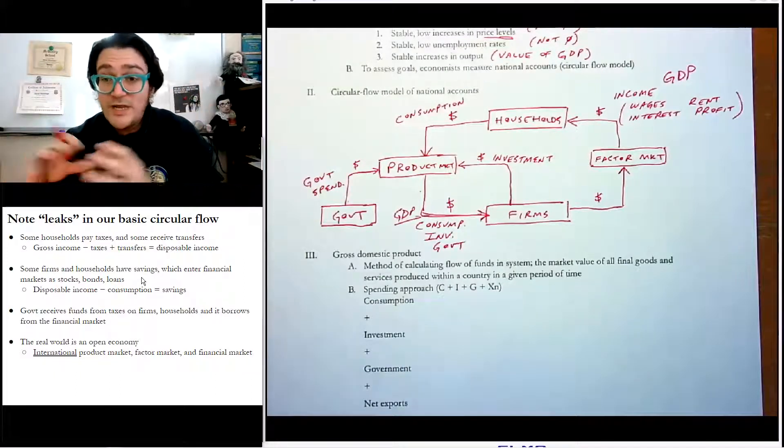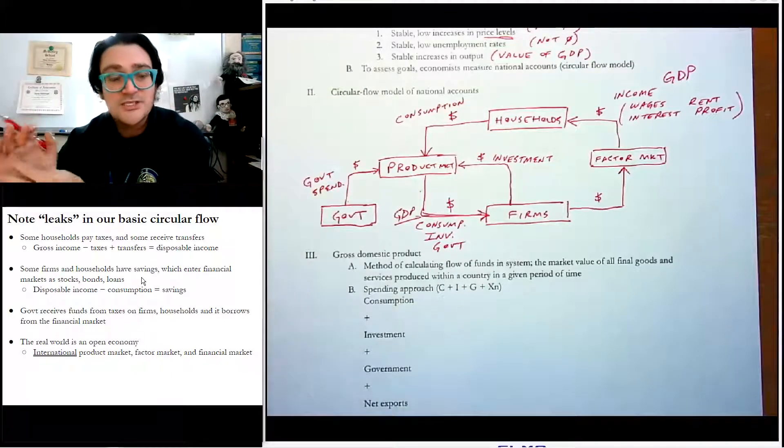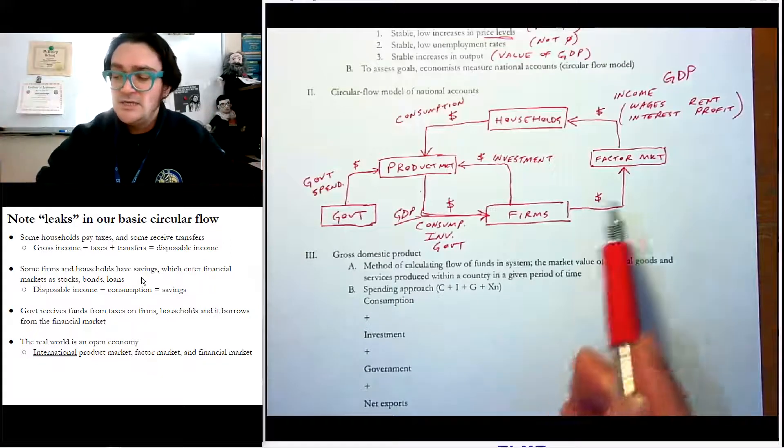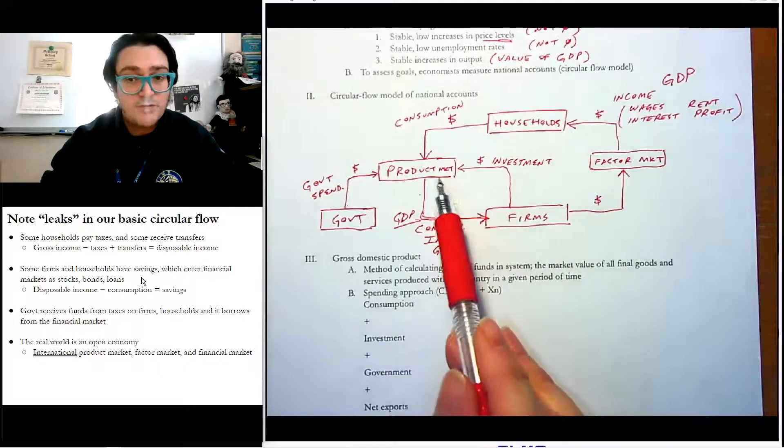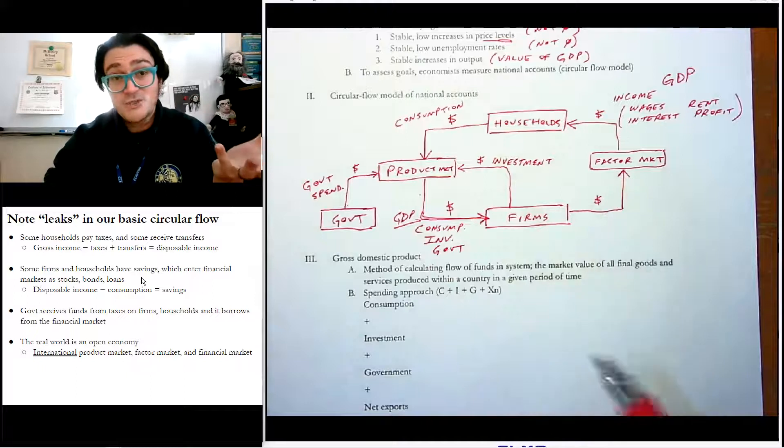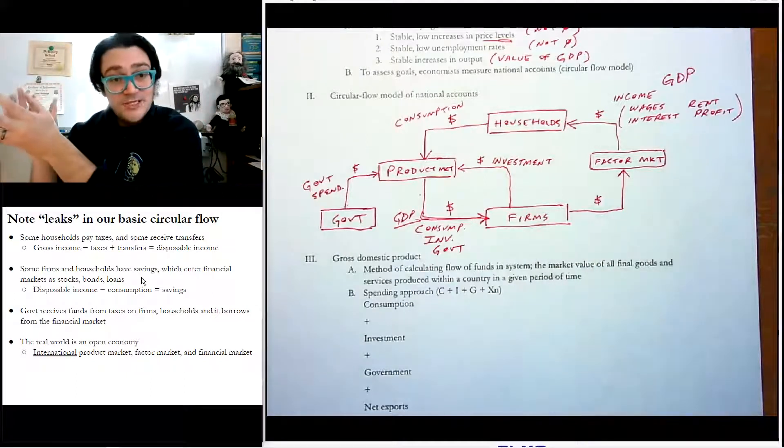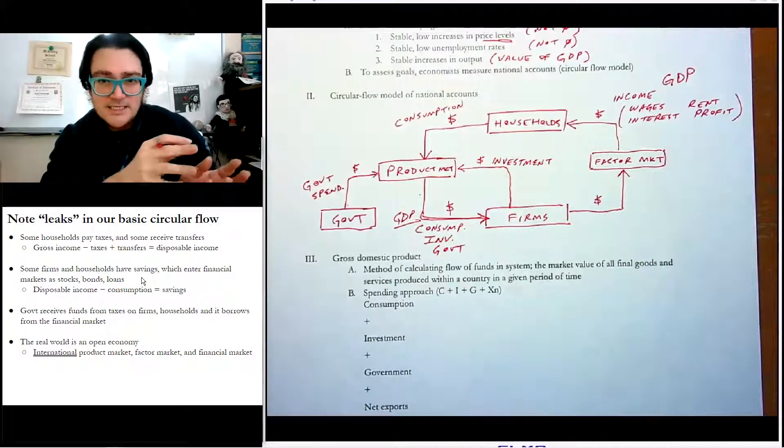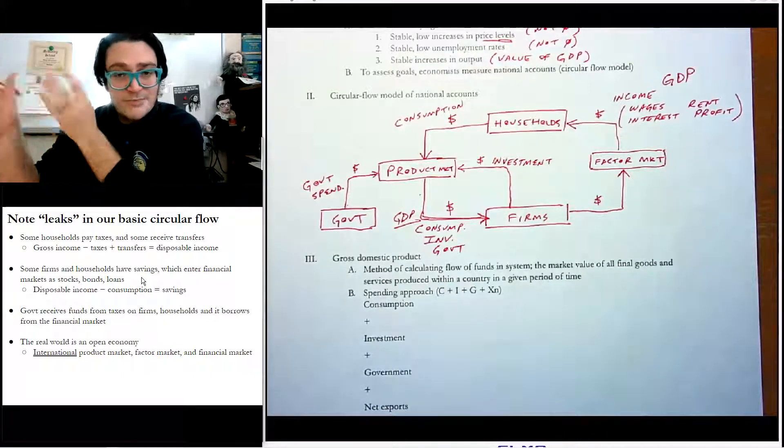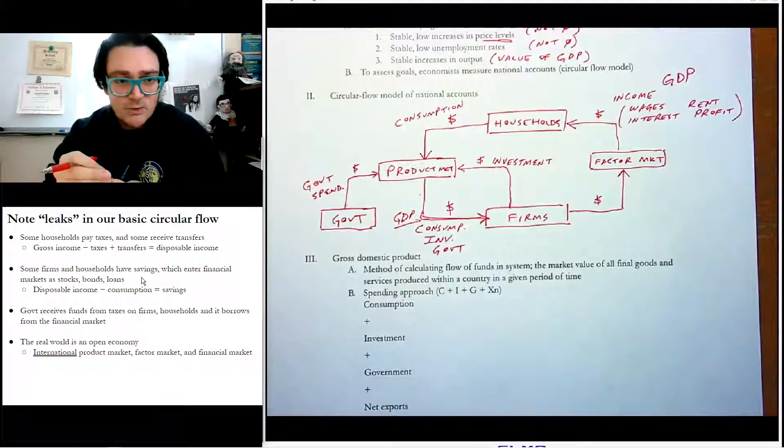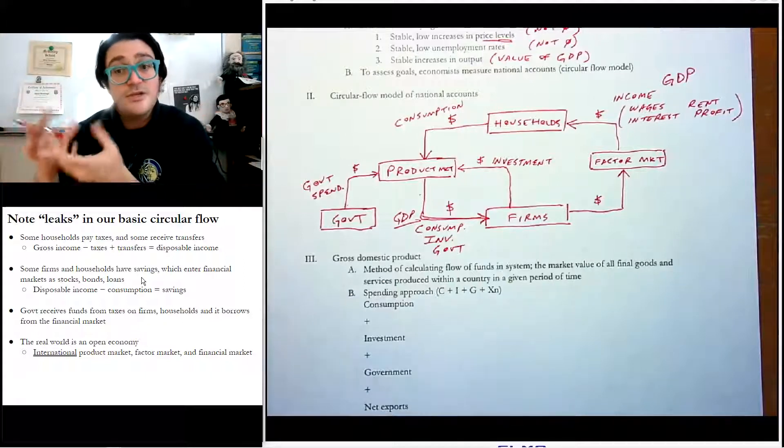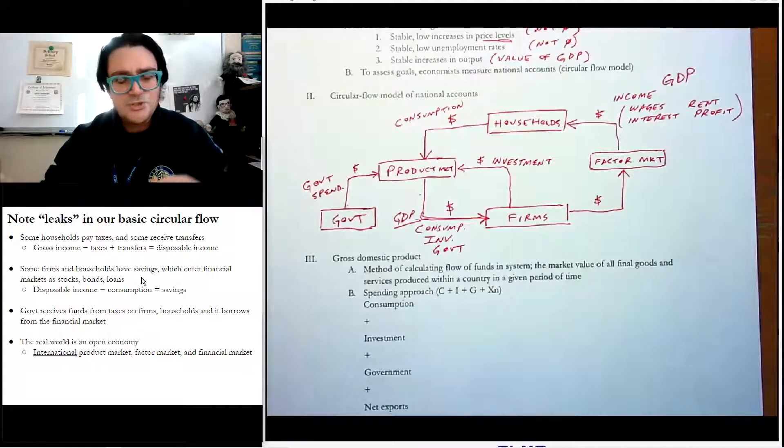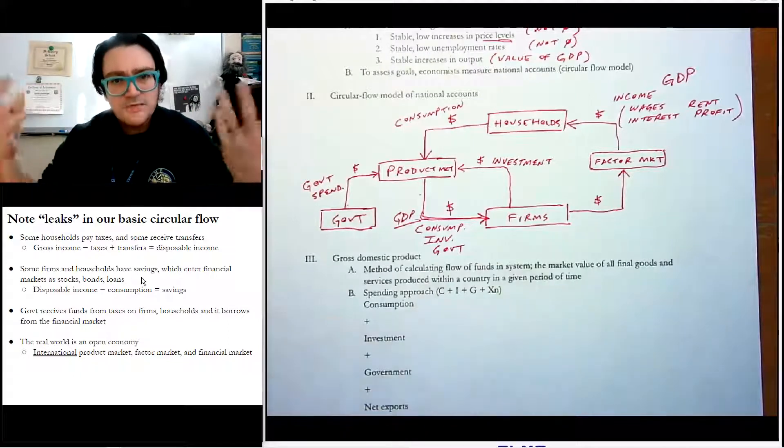Fourth thing that we aren't going to put on this picture, but it'll come to us later in this semester, is the open economy. And that's a fancy way of saying that the whole world also has a product market and a factor market and a financial market. There's a global financial market and a domestic one. There's a global factor market and a domestic one. And there's a global product market with imports and exports and a domestic one. So we're going to look at that stuff in unit five. So as the semester goes on, we're going to add more things to this picture, not literally, but kind of more figuratively.